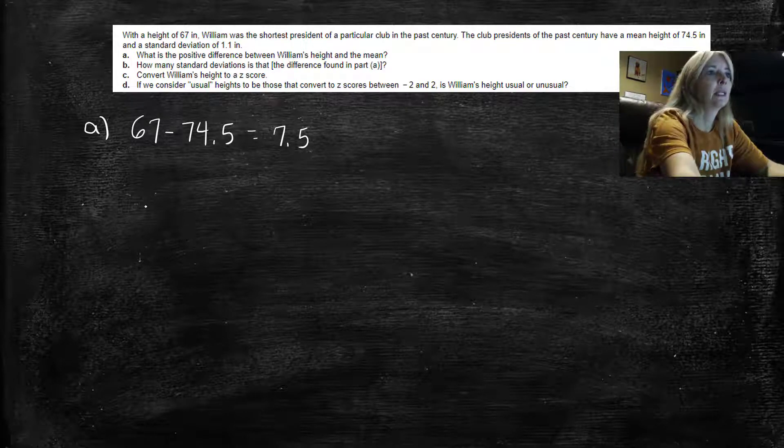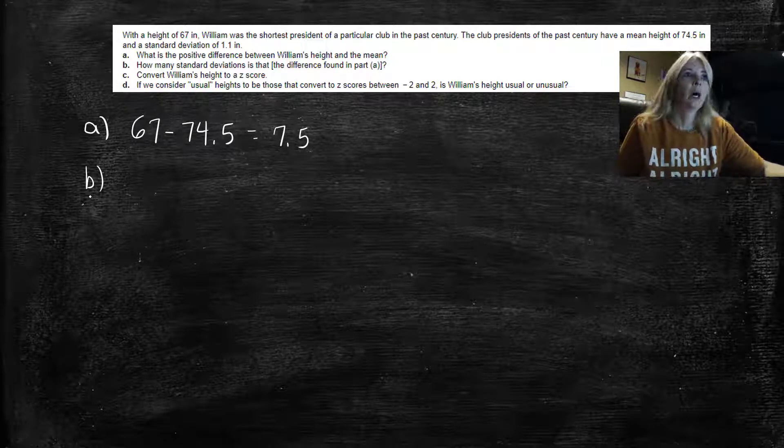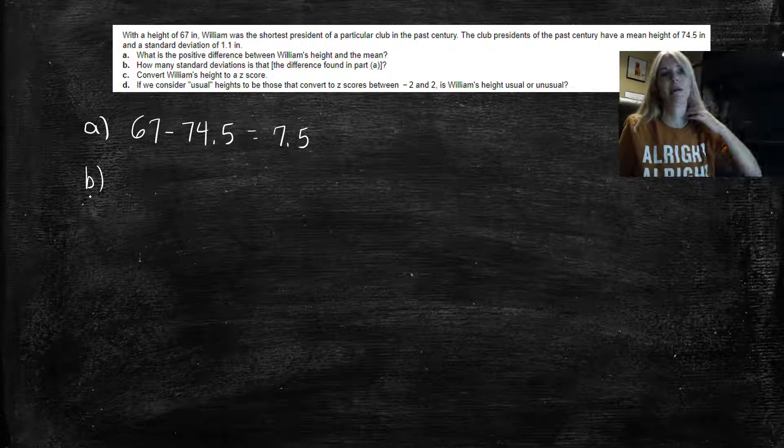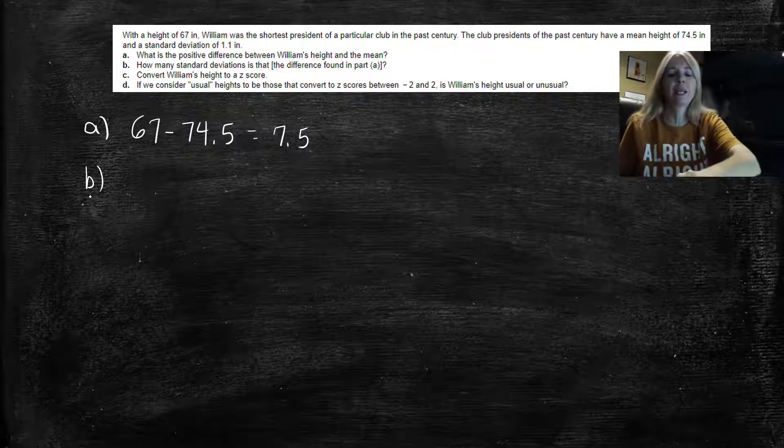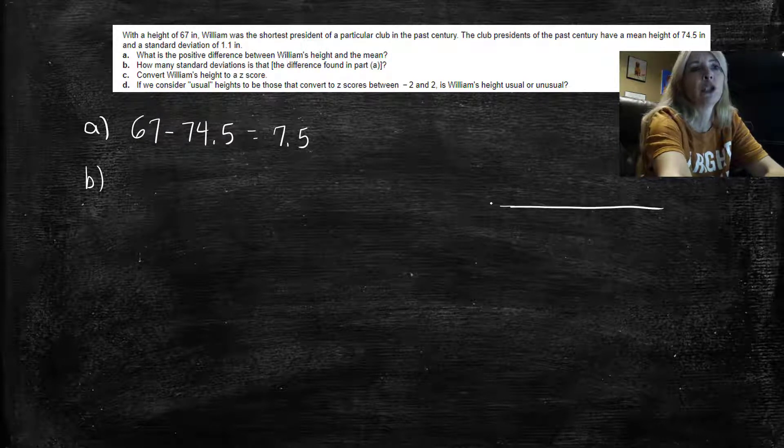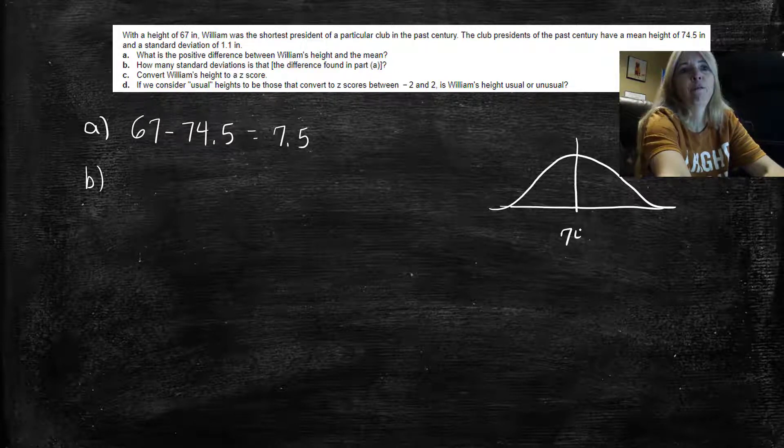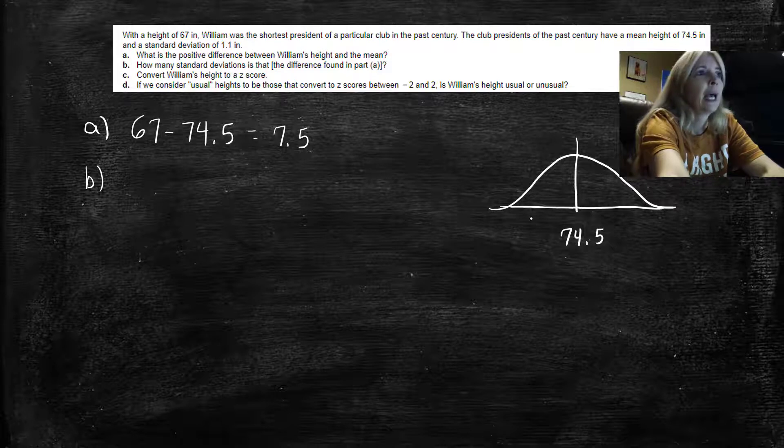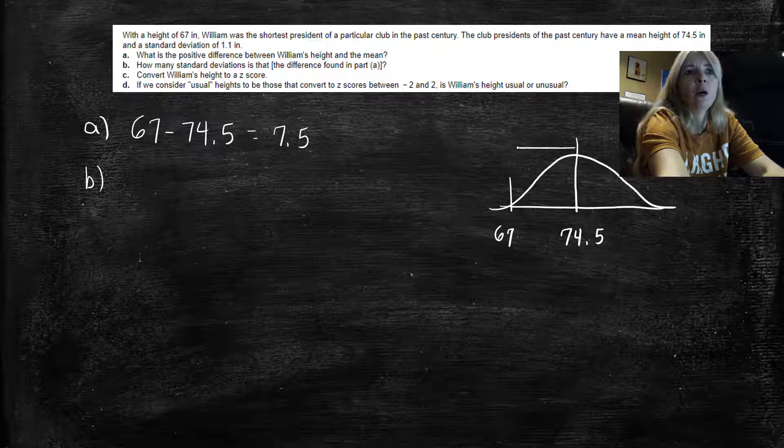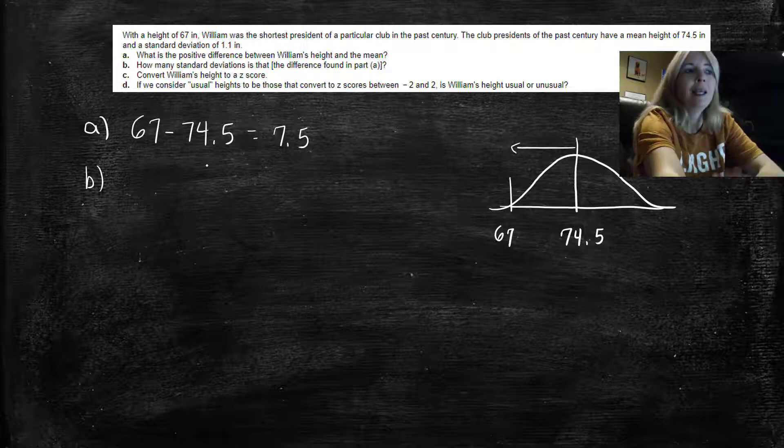And then it says how many standard deviations is that? In other words, how many standard deviations is he away from the mean? Remember, a standard deviation is basically based on—so if I drew a normal curve, a bell-shaped curve, and we're saying that the mean is 74.5 inches, and he's over here somewhere at 67, I want to know in standard deviations how far away that is from the mean.